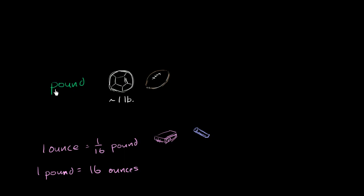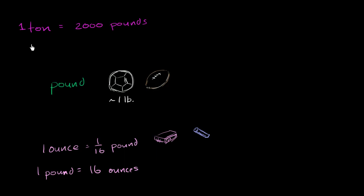If we want to think about weights that are larger than a pound, we would go to the ton. One ton is equal to 2,000 pounds. You have to be a little careful with the ton — in US customary units this is 2,000 pounds, sometimes called the short ton. There's also a long ton and a metric ton, but here we're talking about US customary units, which is the short ton.